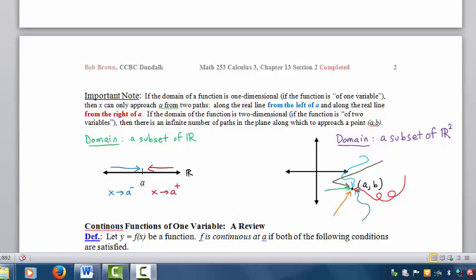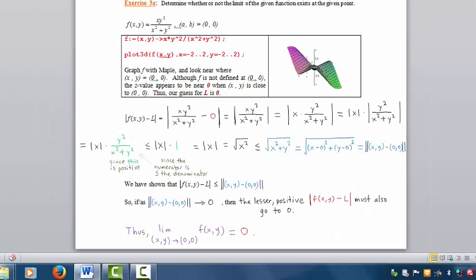But since there are infinitely many different paths that you can take in towards a point, you cannot compare all the different path limits and see if they are all equal. In order to prove a limit exists, as we do in exercise 3a, it takes a very sophisticated algebraic argument.